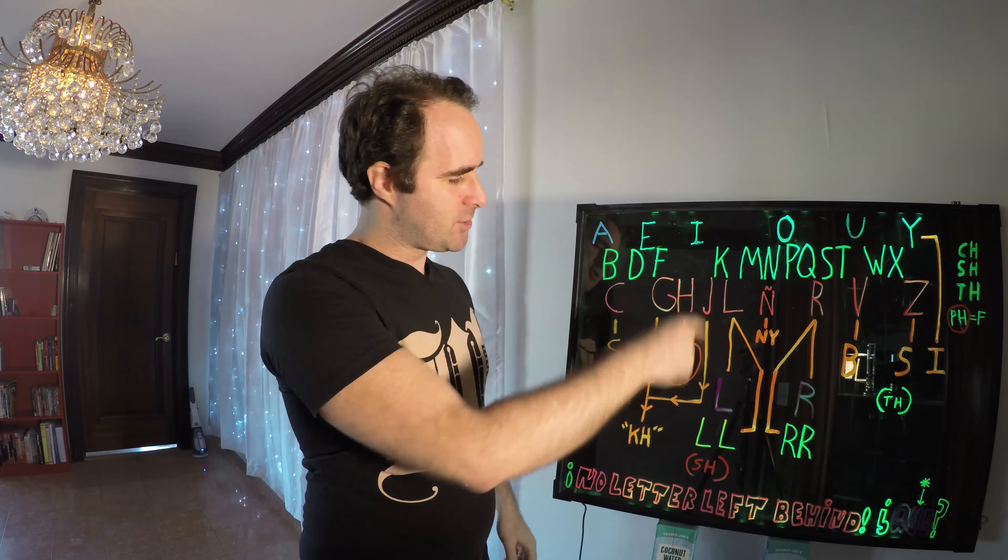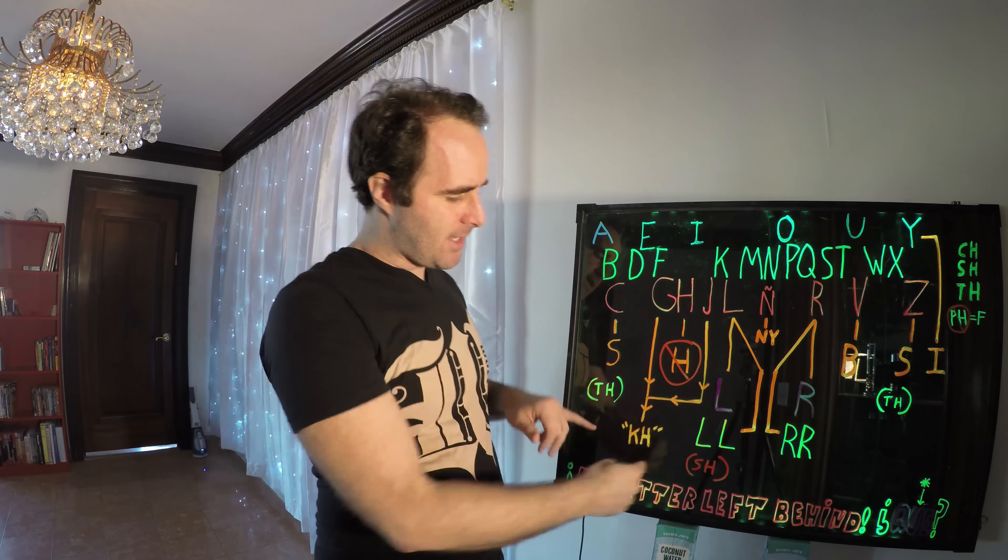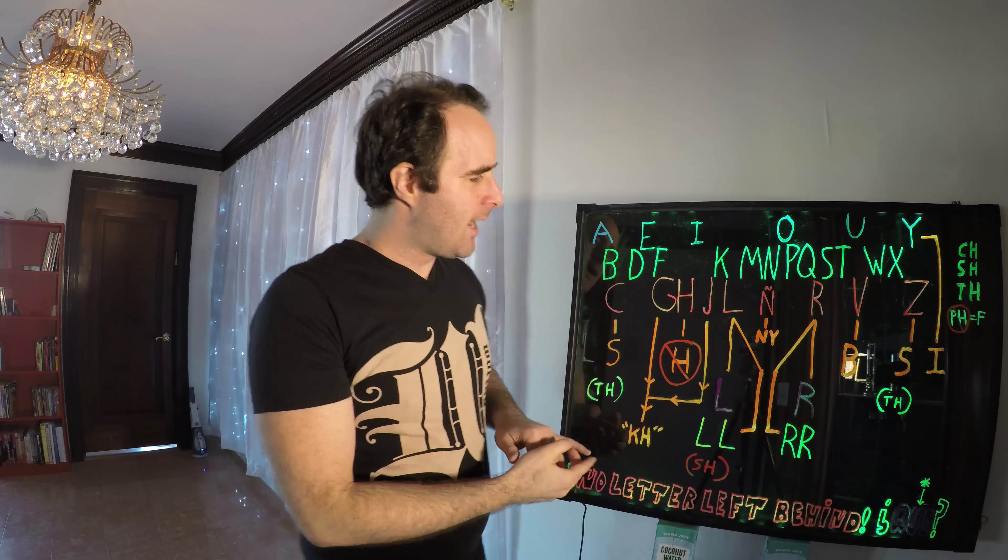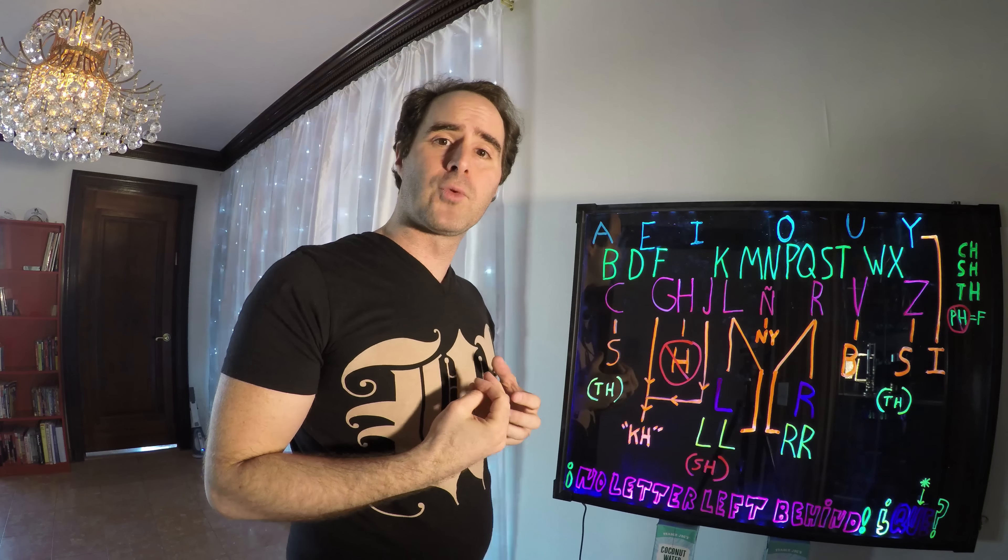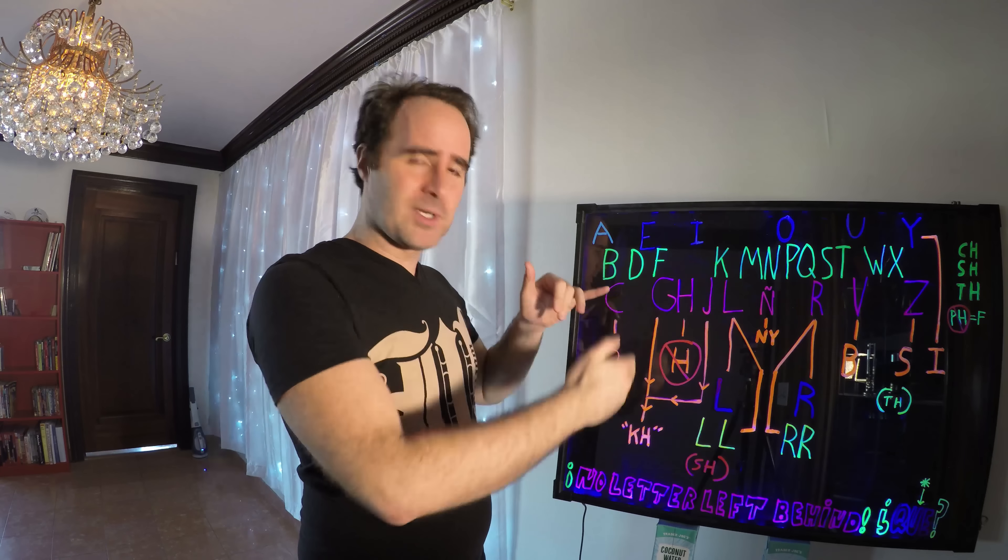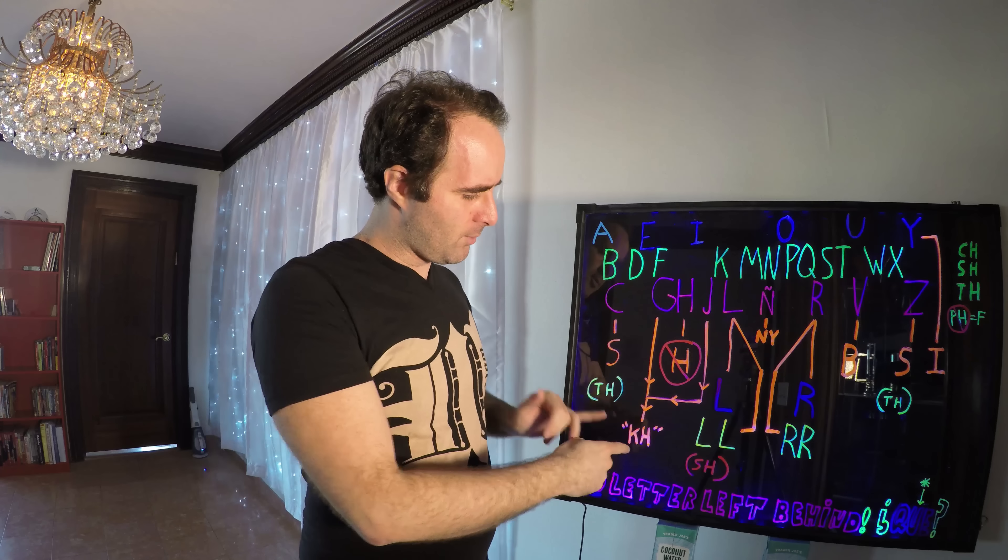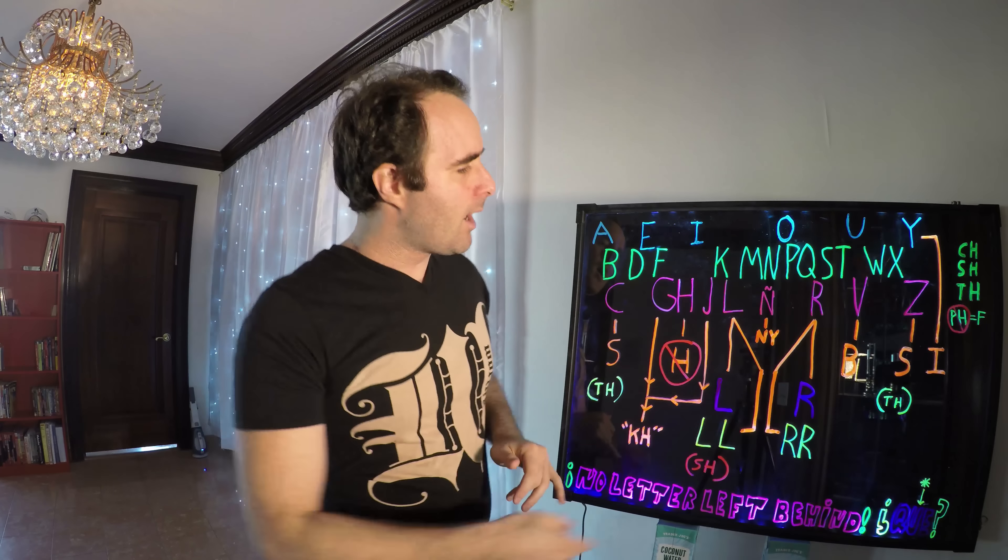J, the actual letter J, same thing. It becomes a CH basically. G can be the G or the J just like in English, depending on which part of the word it goes in, and the grammar rules are pretty much identical to English. So G is a G or a J and the J sound is always a CH. Got it? Hopefully.